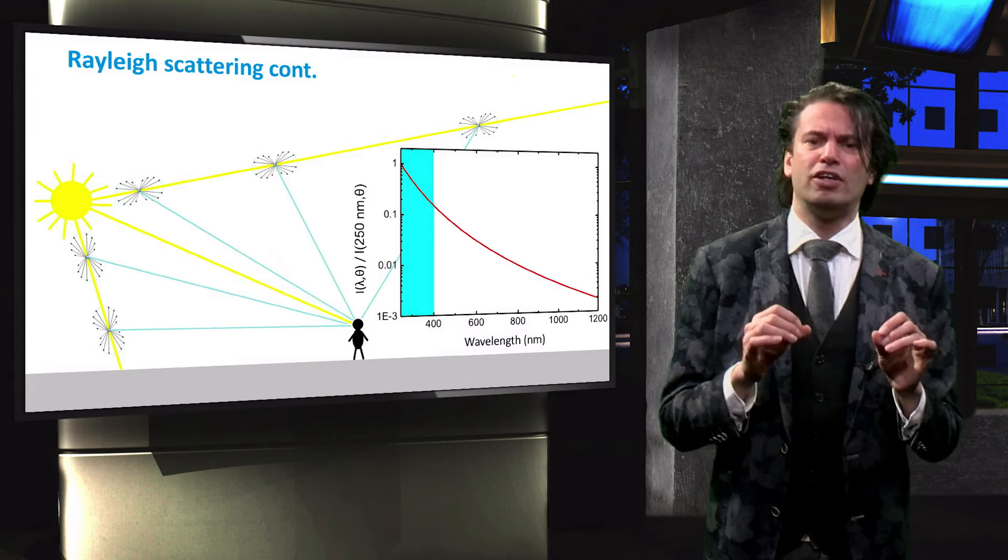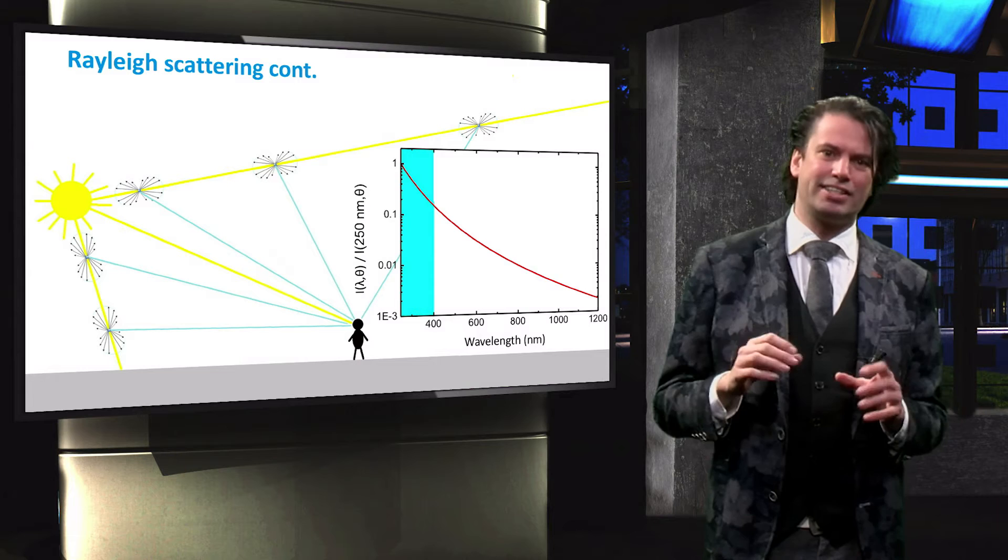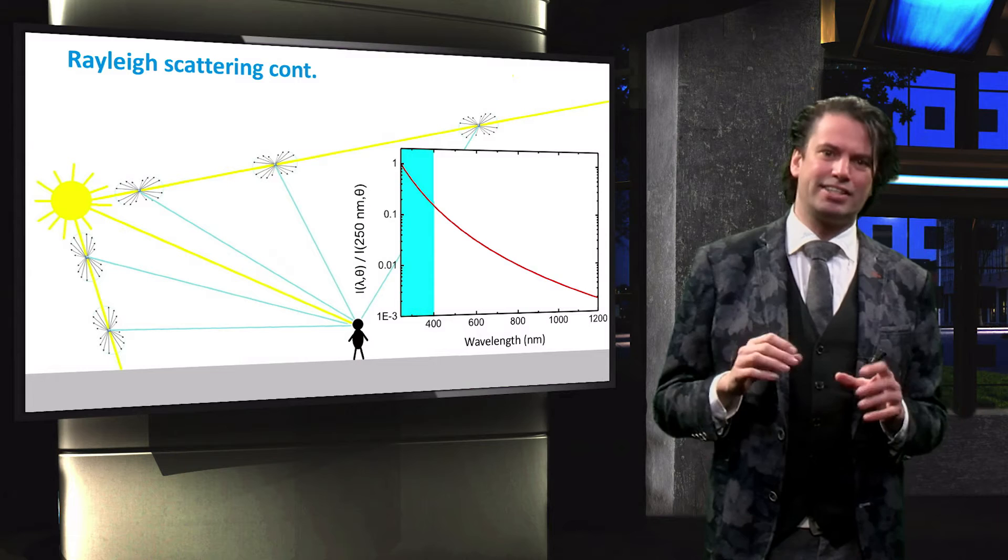Furthermore, as we observed from the graph, blue light is scattered most effectively. Therefore, from all directions in the sky, the intensity of blue light that reaches our eyes is dominant. Hence, the sky appears blue.